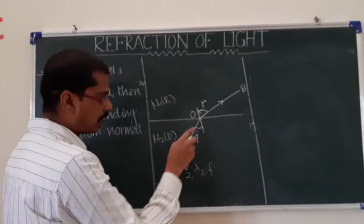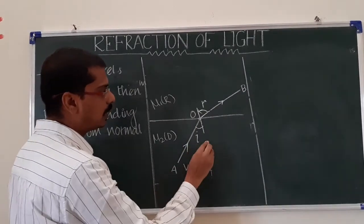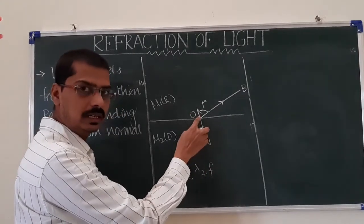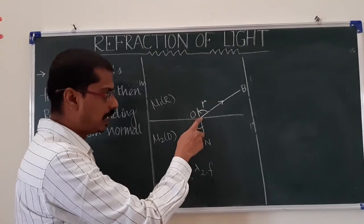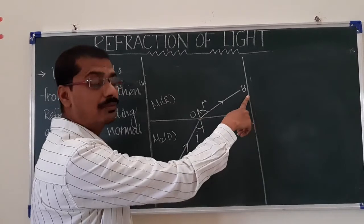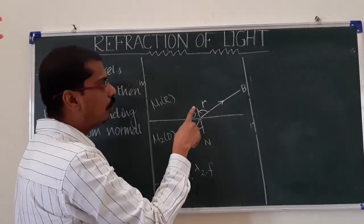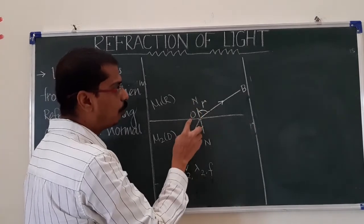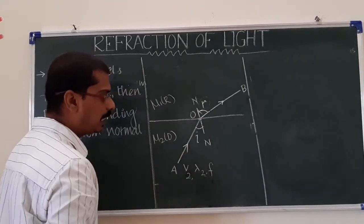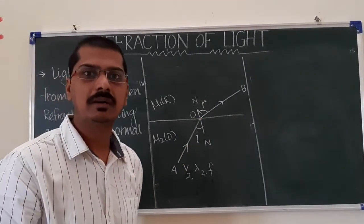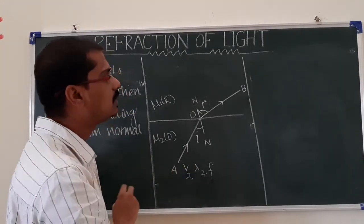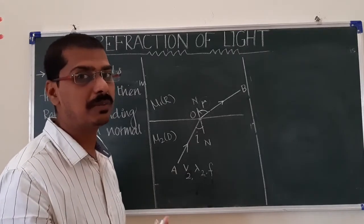In both conditions we can apply Snell's law. The angle of incidence is angle AON, where OA is the incident ray and N is the normal. OB is the refracted ray. Whenever light travels from rarer to denser medium or one medium to another, velocity and wavelength both change, but frequency remains constant.